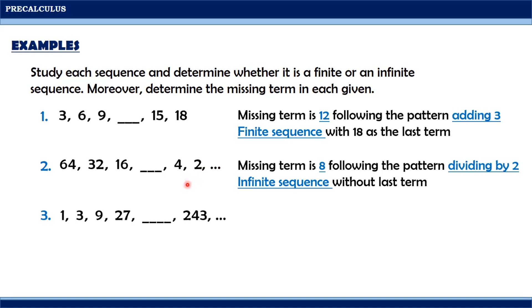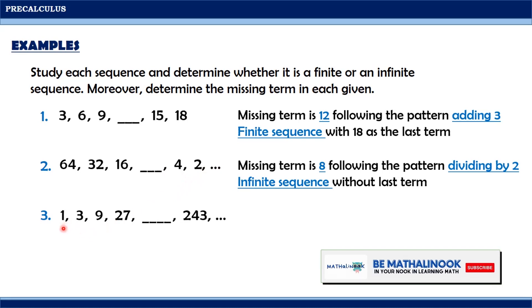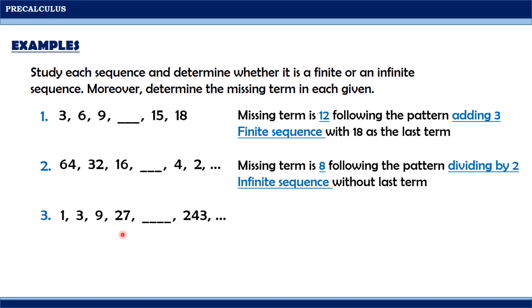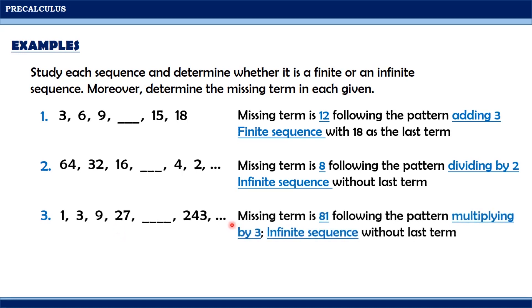For our last example, the first term is 1, followed by 3, then 9, and 27. The pattern is multiplying by 3. 1 times 3 is 3, 3 times 3 is 9, and 9 times 3 is 27. Hence, the missing term is 27 times 3, which is 81. Since the sequence has an ellipsis at the end, this sequence is also an infinite sequence without a last term.